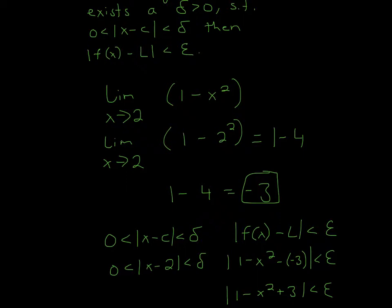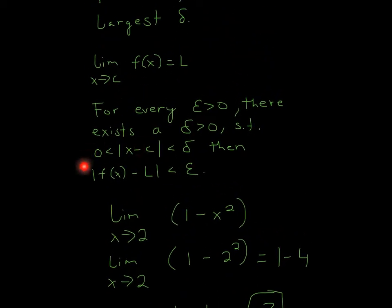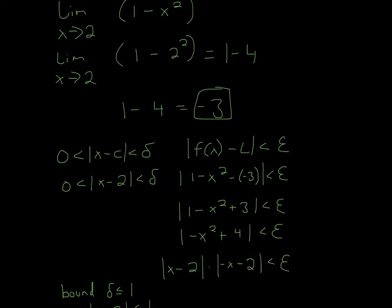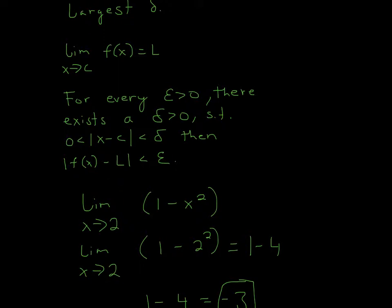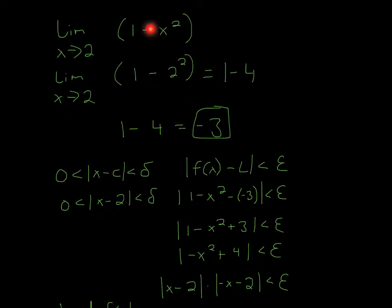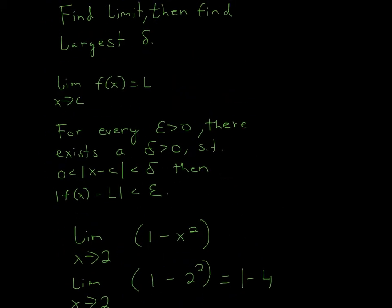Now you can use this definition. The two most important pieces of information are these two, and then fill out everything you know. So I rewrote those two pieces of information, and now I'm going to plug in everything I know. Here I plug in that c is equal to 2 — x approaches that number, which is 2. And f(x) is just the function, 1 minus x squared. L is the actual answer, negative 3.